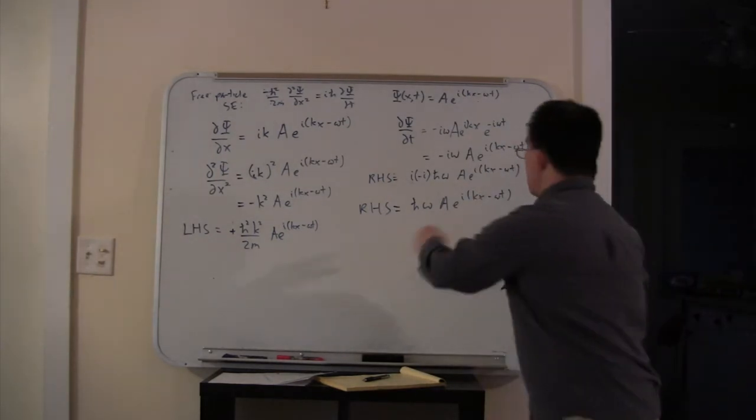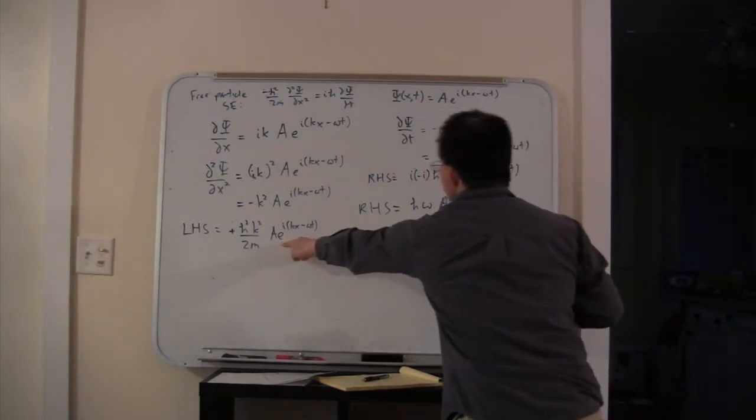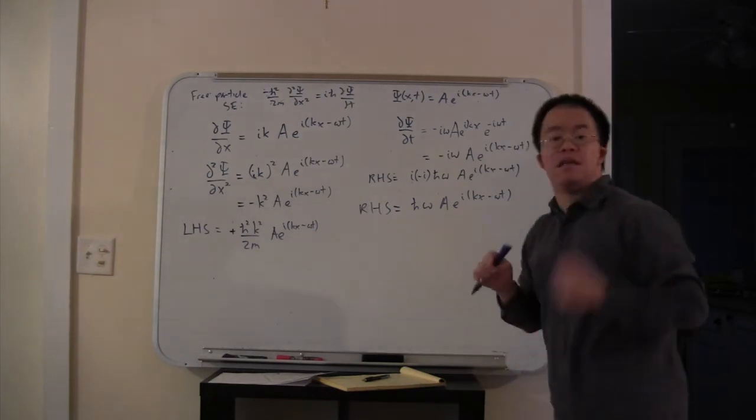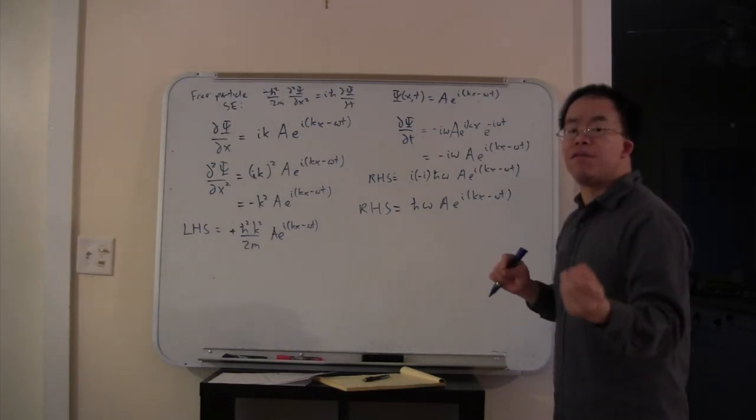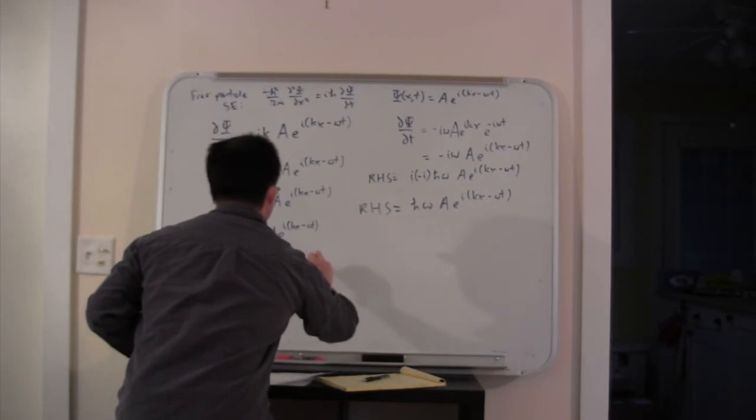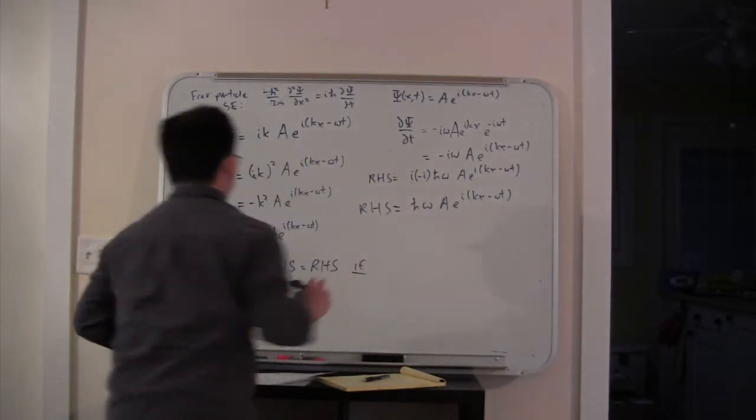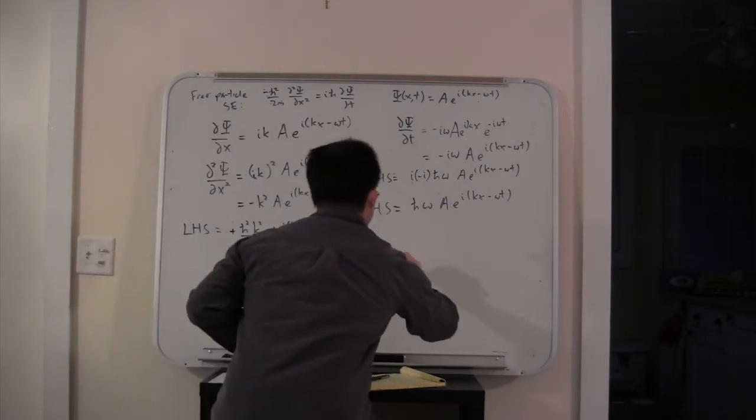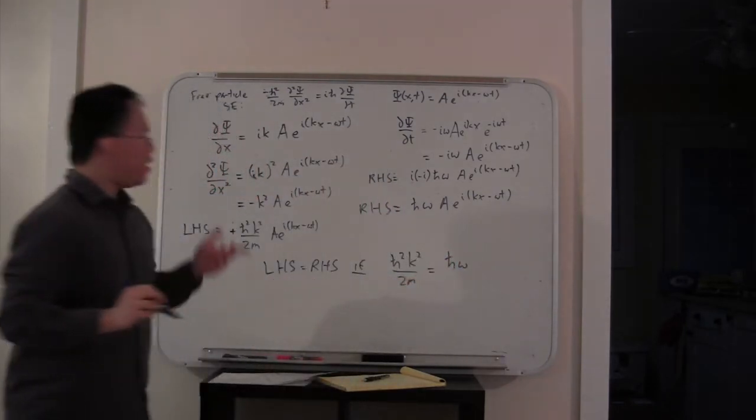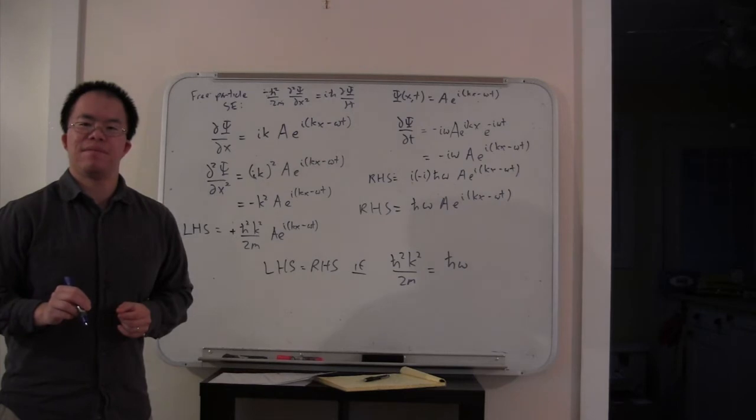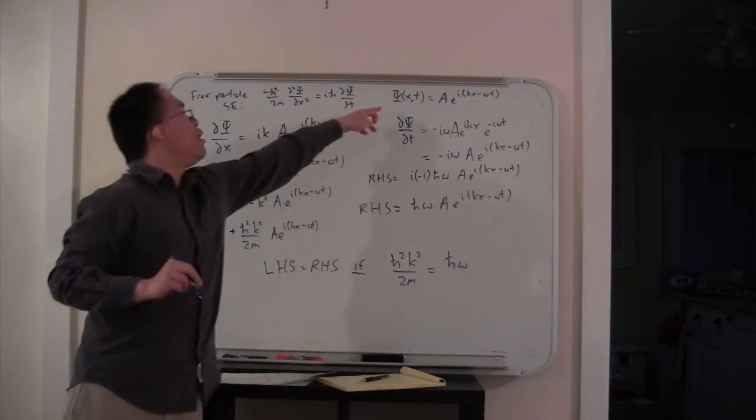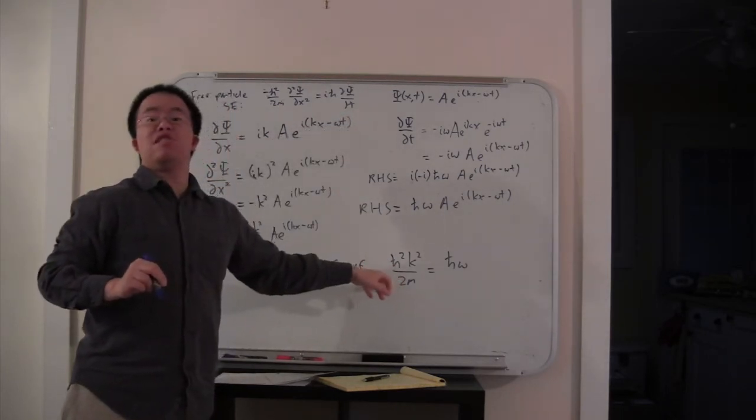Let's compare the left-hand side and the right-hand side. Notice we have the same factor of our wave function on both sides. What is needed for the left-hand side to equal the right-hand side? LHS equals RHS if h-bar squared k squared over 2m equals h-bar omega. And that's exactly what I claimed.